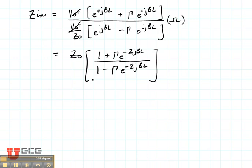Now this little term right here allows us to write the E to the minus J beta L as cosine of beta L plus J sine of beta L. That's if it's plus, and it's going to have a minus in here if it's minus.